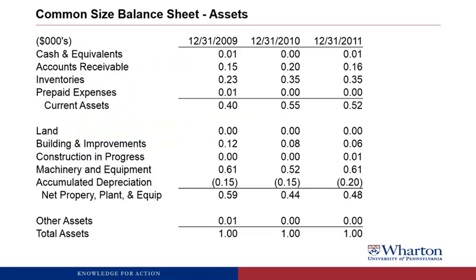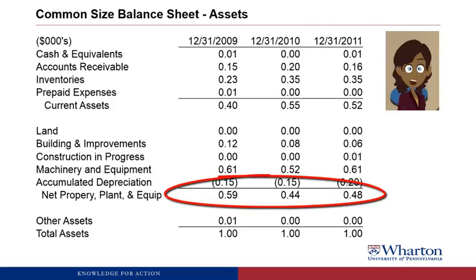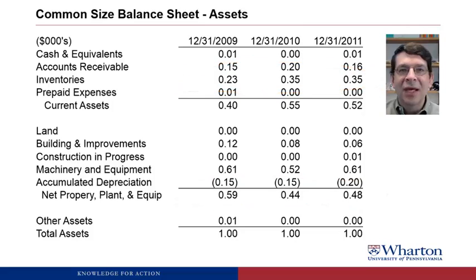Here's what the common size balance sheet looks like for Plainview — this is the asset side. Pause the video and see what looks different now that we've common sized. Even though PP&E was growing so much, this makes it look like it is shrinking. It is really inventory that is growing dramatically. So it's inventory that seems to be really out of whack, growing more than the rest of the company. And we saw some evidence that inventory is having a negative effect on cash flow. We're going to want to make sure we understand what's going on with inventory in much more detail as we go through the videos.